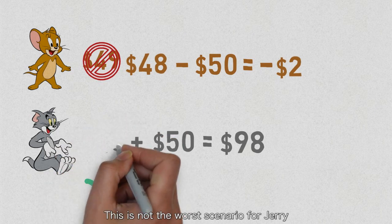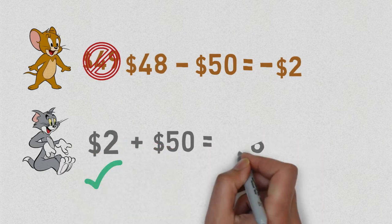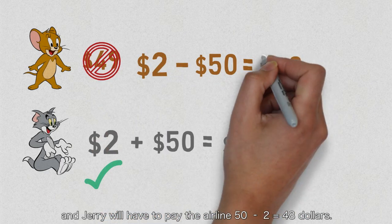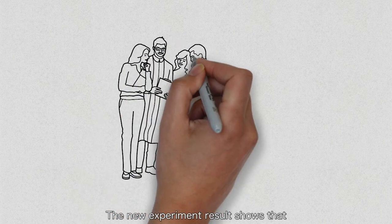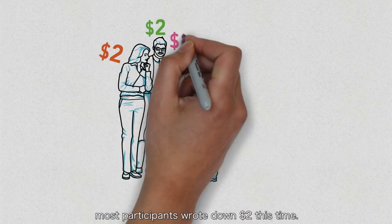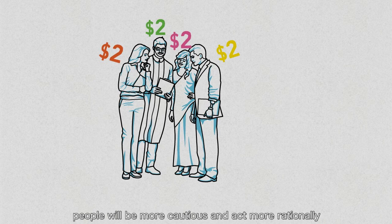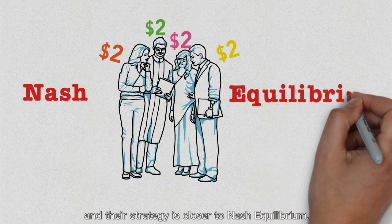This is not the worst scenario for Jerry. What if Tom only quotes two dollars? Then two will be taken as the true value and Jerry will have to pay the airline 50 minus 2 equals 48 dollars. The new experiment result shows that most participants write down two dollars this time. This result implies that when the rewards and punishment have increased, people will be more cautious and act more rationally, and their strategy is closer to the Nash equilibrium.